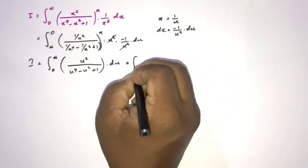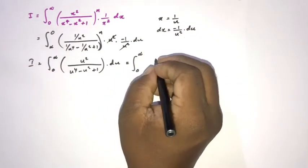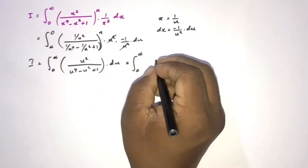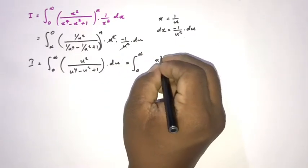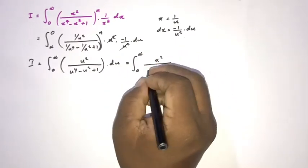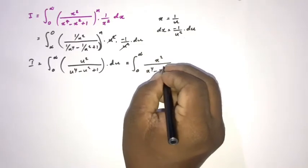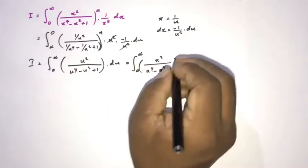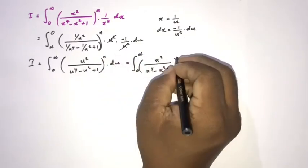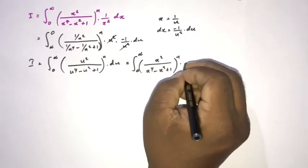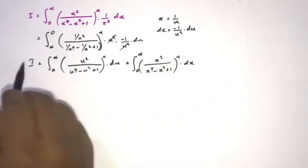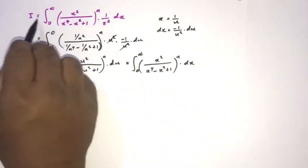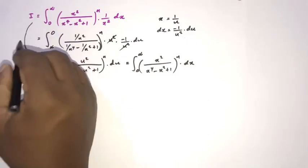Since a definite integral is independent of its variable name, we can replace u with x. So we have x squared over x to the fourth power minus x squared plus 1, raised to the n-th power, dx — which is also equal to I. So we have two expressions both equal to I.